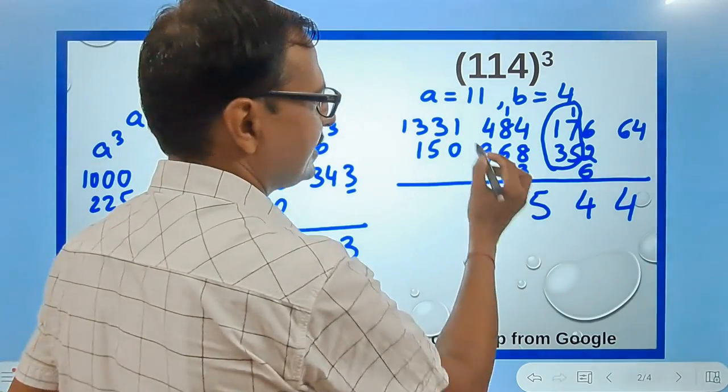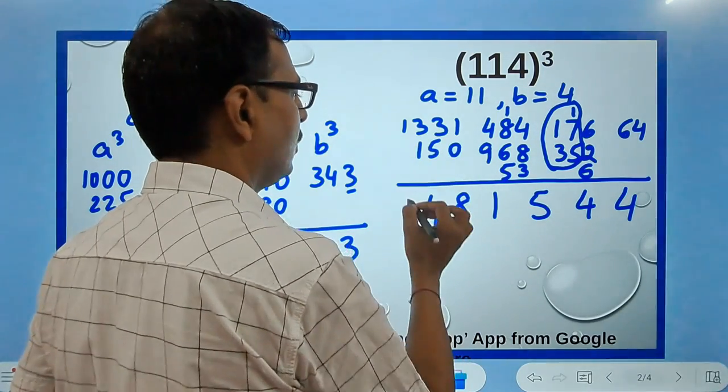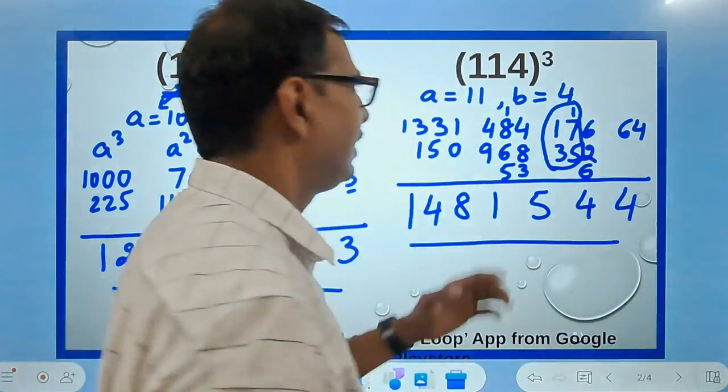And now just add this, so you get 1, 8, 4, and 1. Here we have the result: 114³ is 1,481,544.